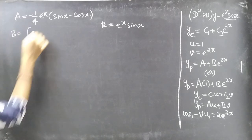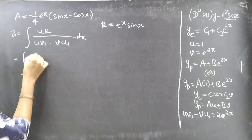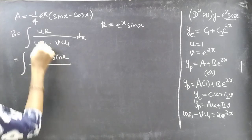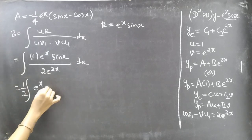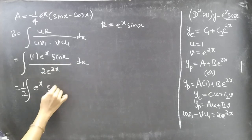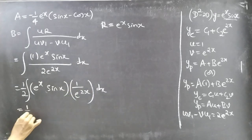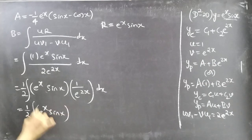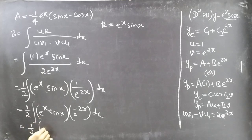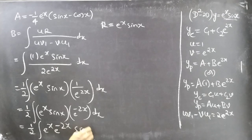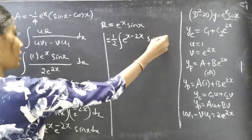Now find b using ∫[uR / (uv₁ - vu₁)] dx = ∫[1 · eˣsinx / (2e^(2x))] dx = 1/2 · ∫eˣsinx · e^(-2x) dx = 1/2 · ∫e^(x-2x) sinx dx = 1/2 · ∫e^(-x) sinx dx.